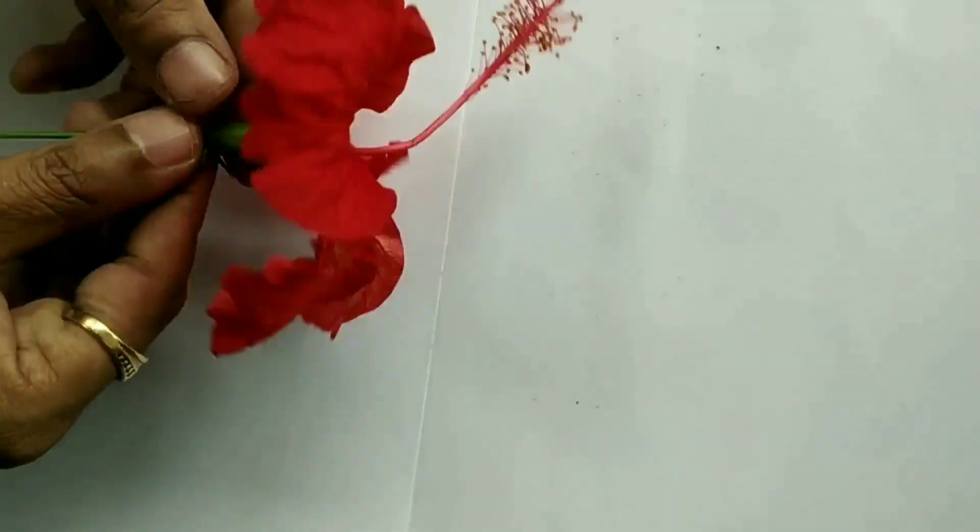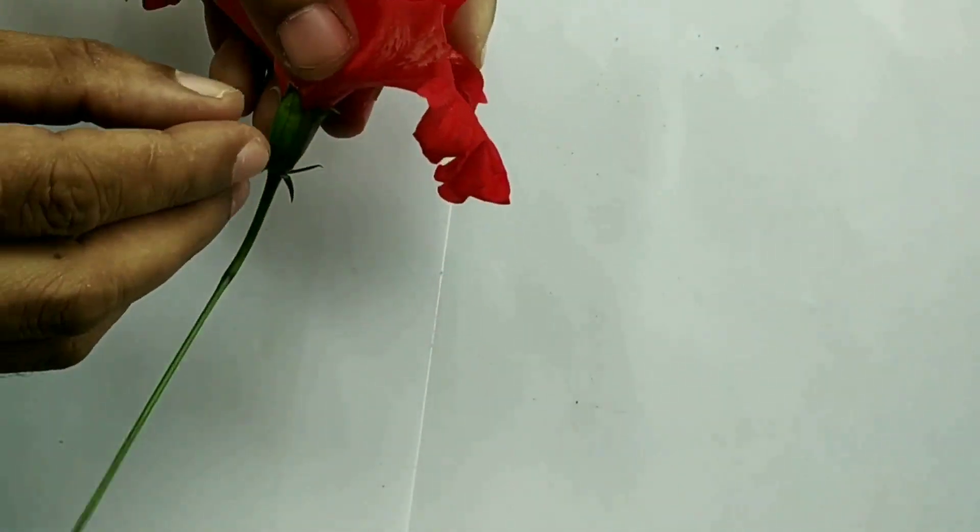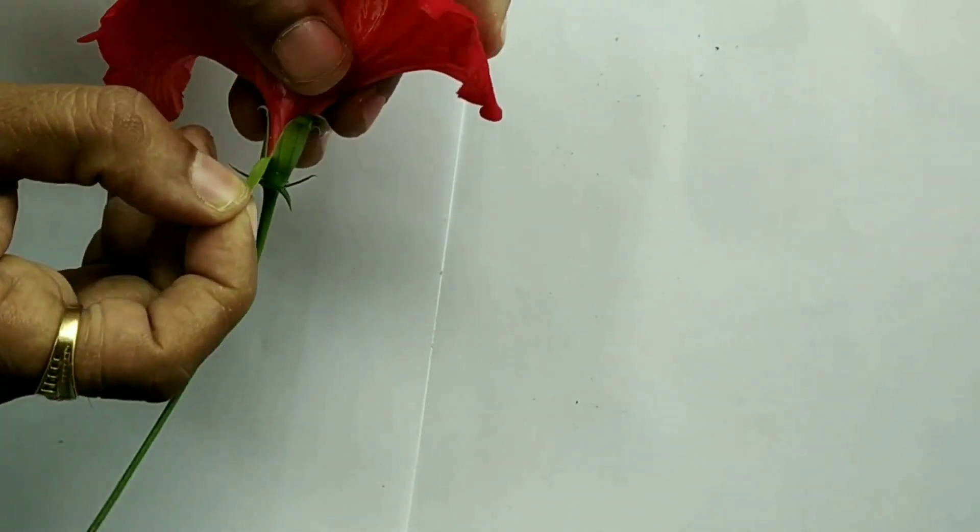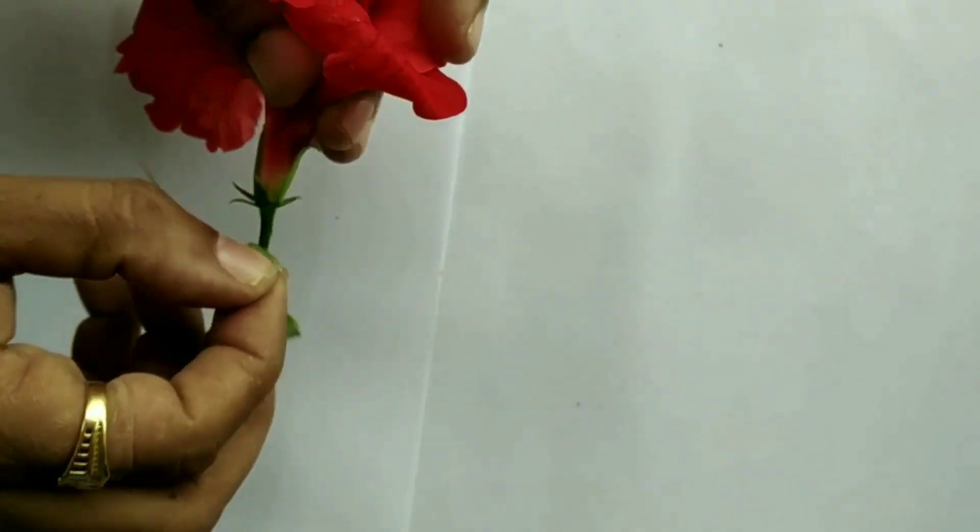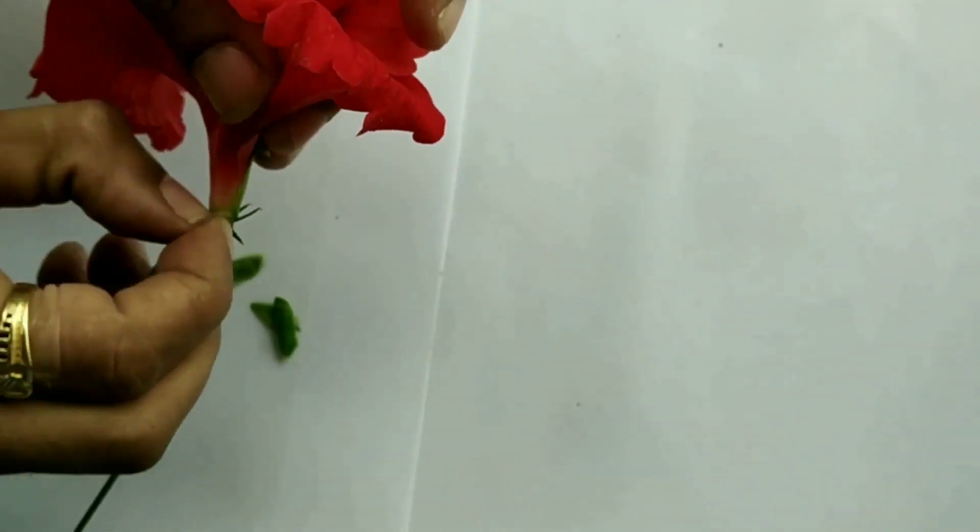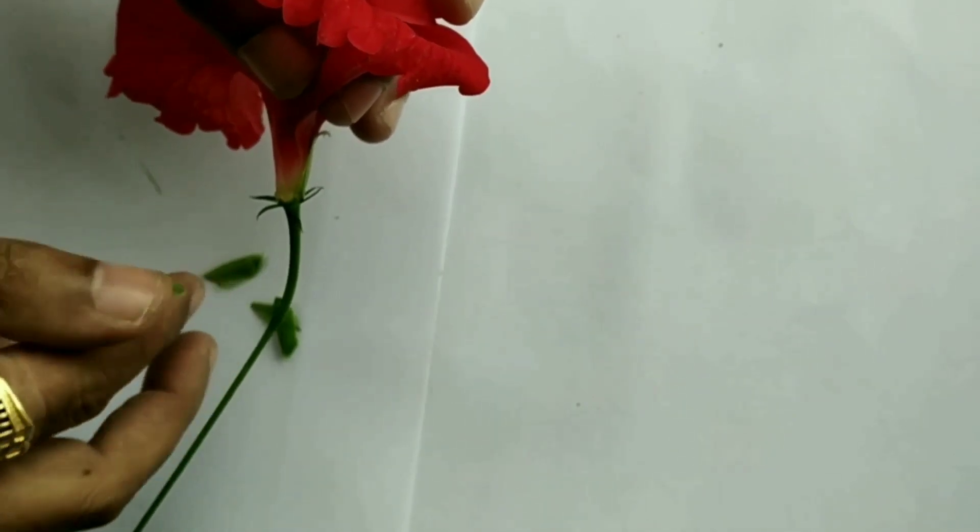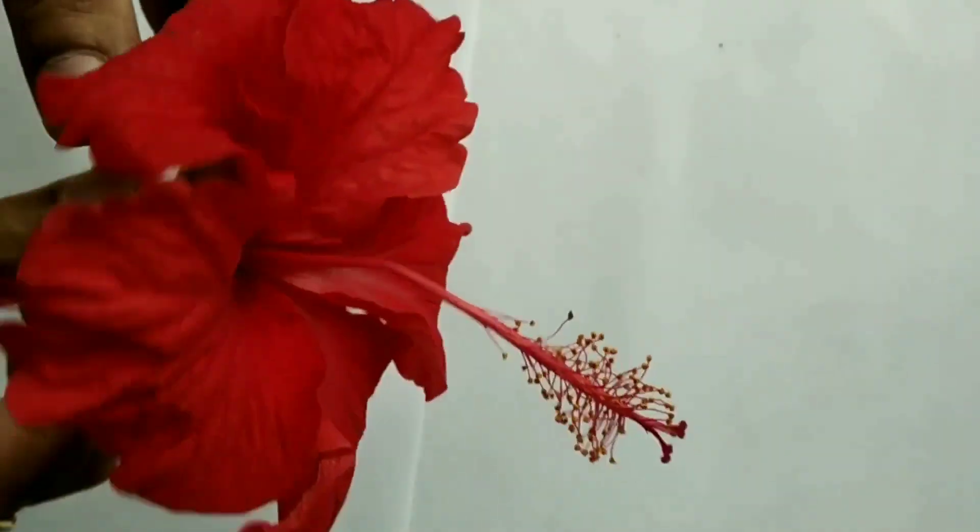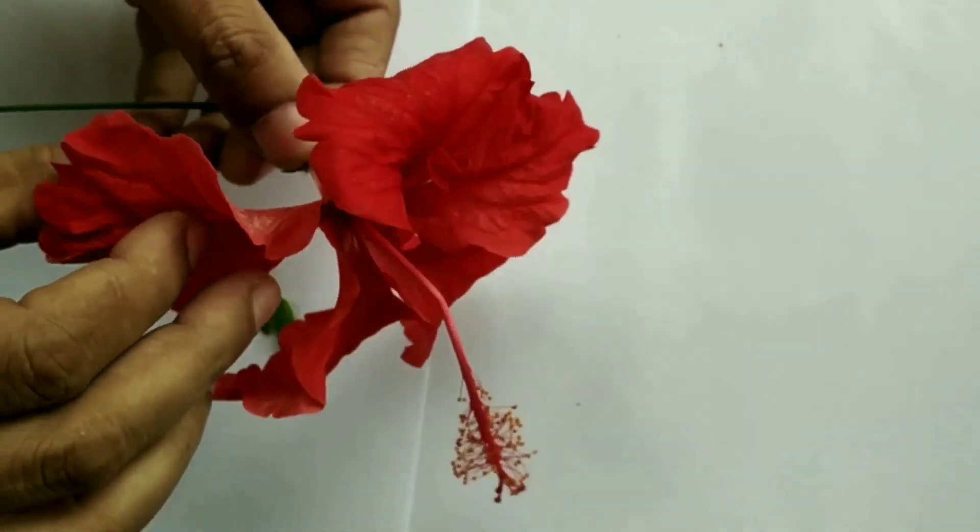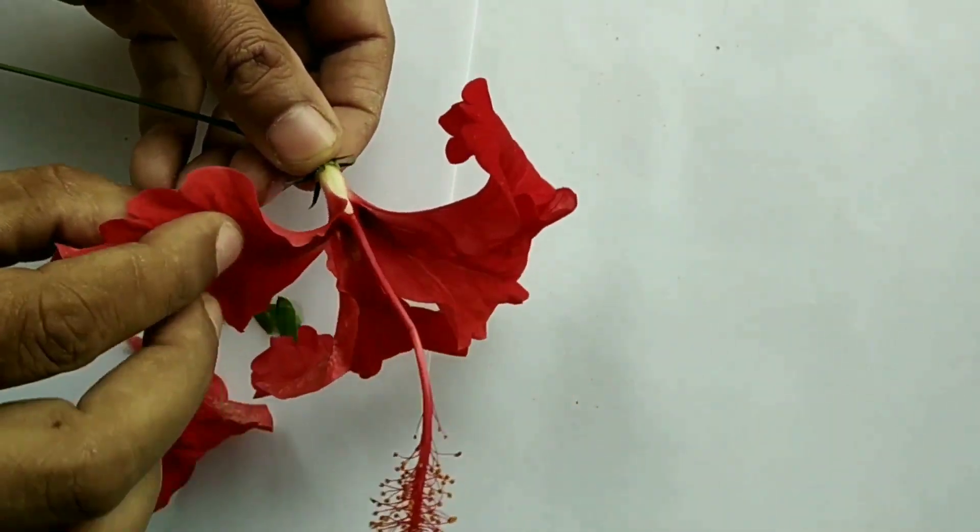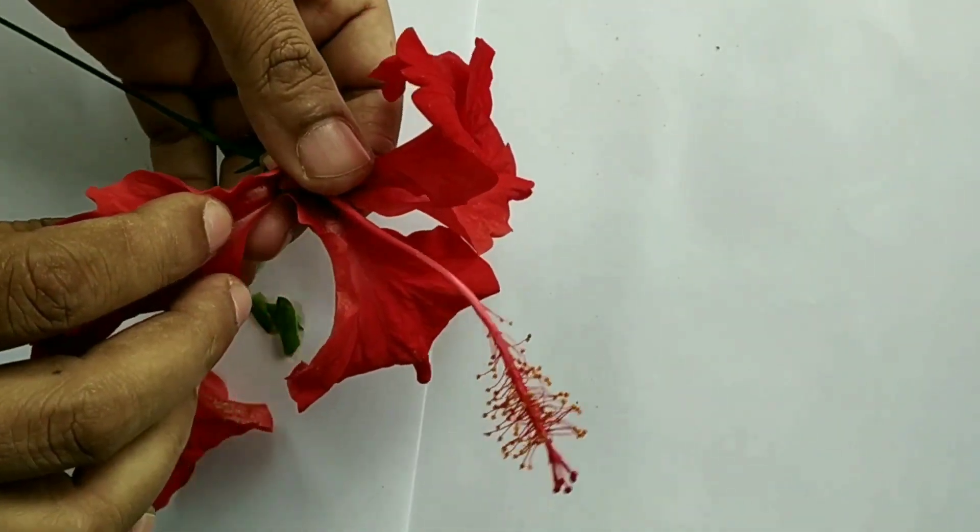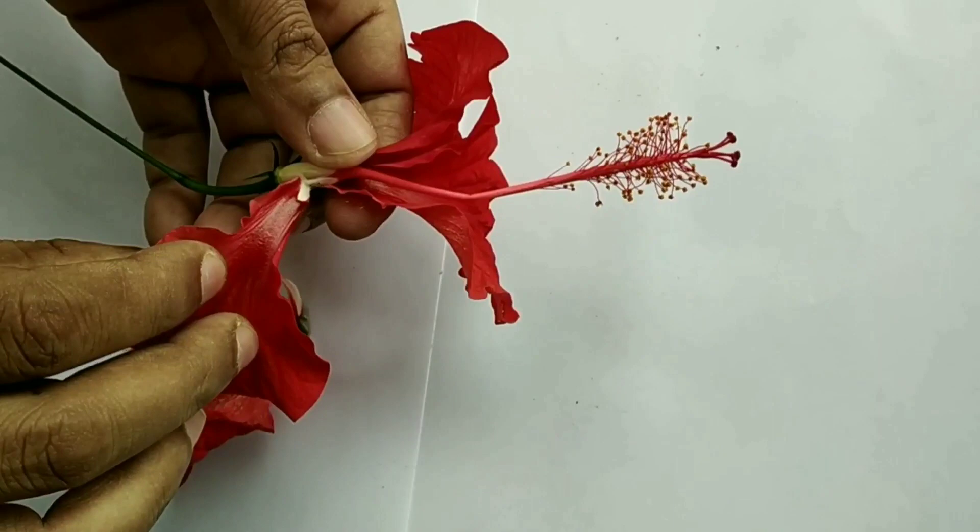Now, remove this calyx part of the flower. I am removing this greenish colored calyx here, one by one. Let us see here. I am removing the corolla part of the flower. These are the petals. One by one, I am removing all these petals.